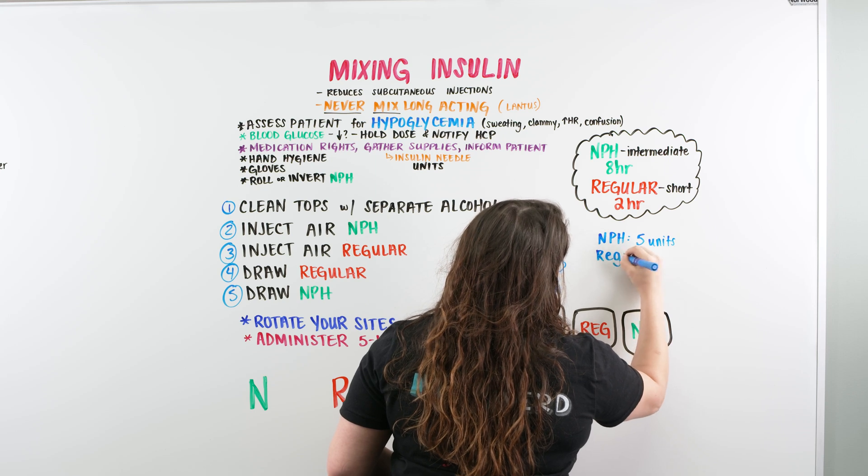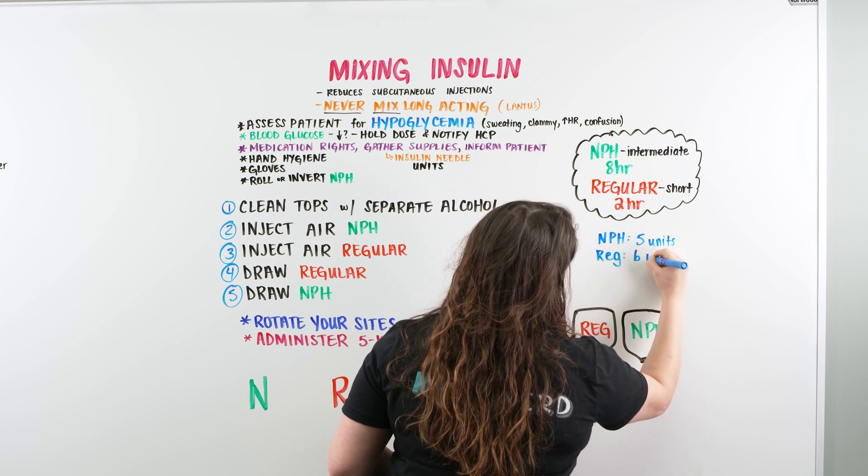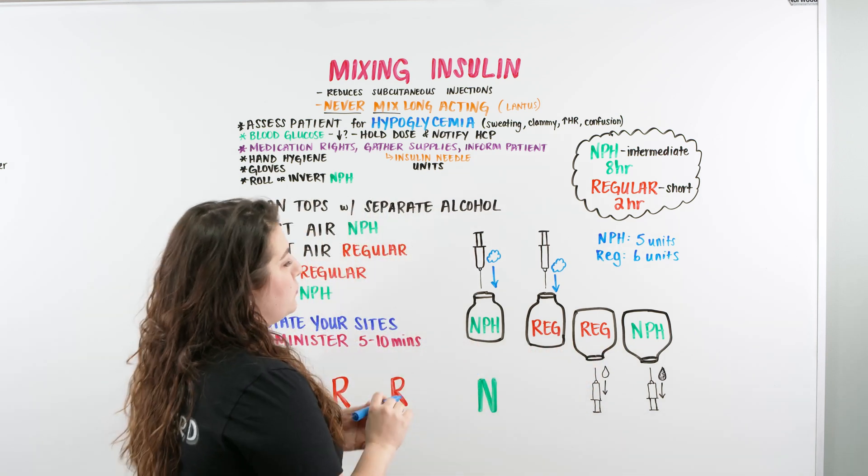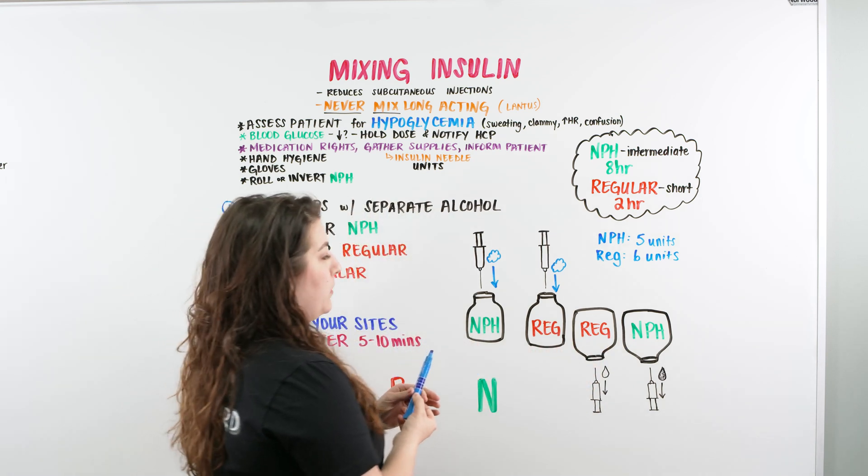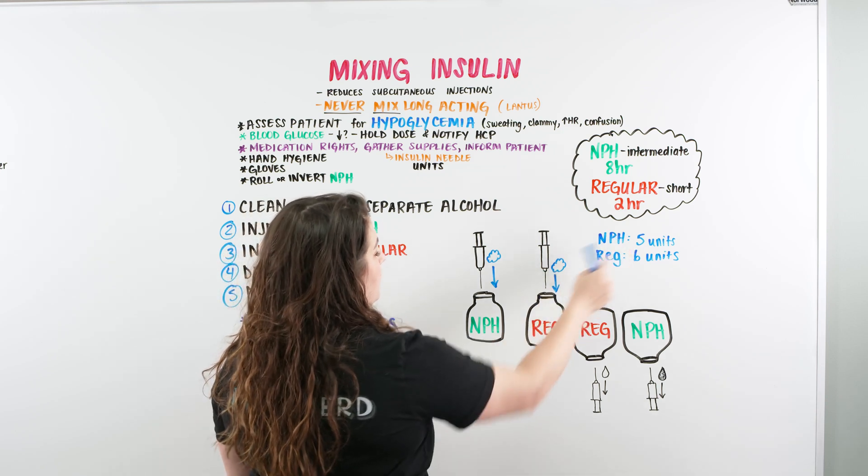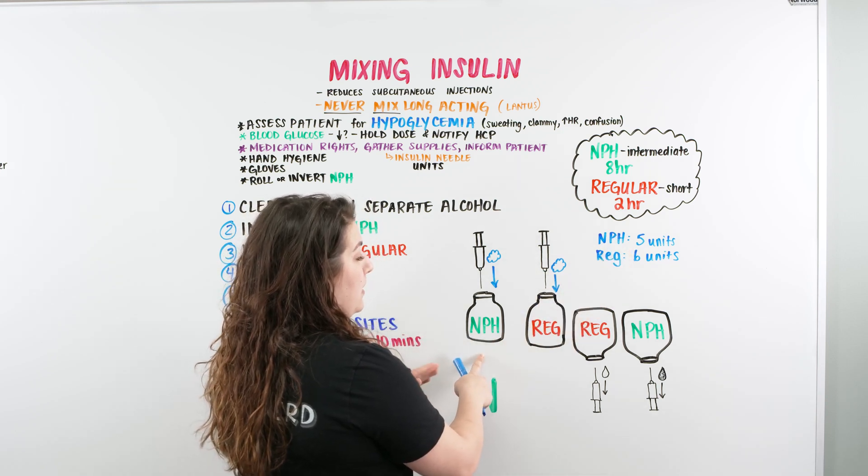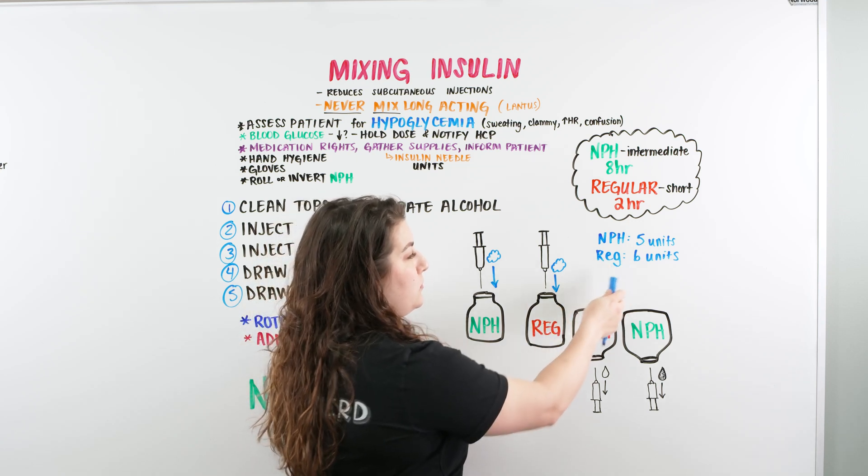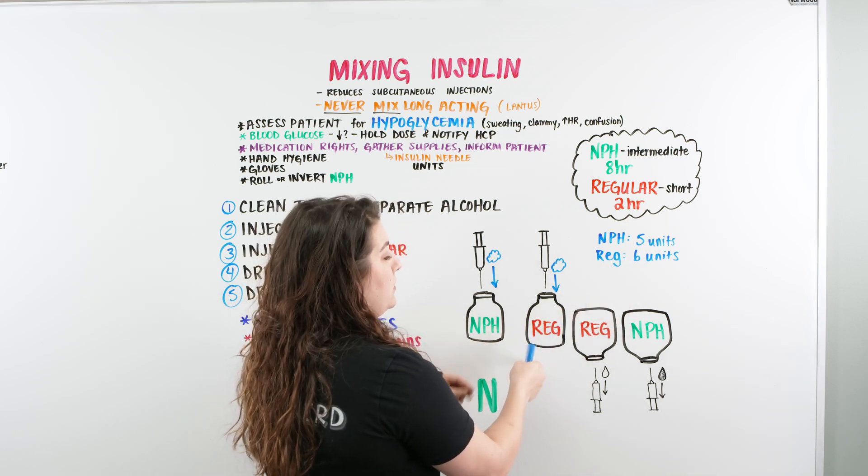Say we're doing that. So when you have your syringe, you're going to pull back on the plunger for five units and inject that air into the NPH. Boom, five units goes in. Then you're going to pull up your six units and inject that air into the regular.